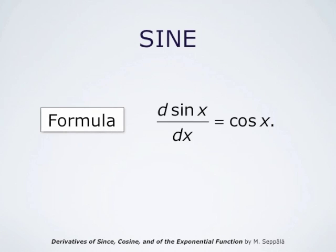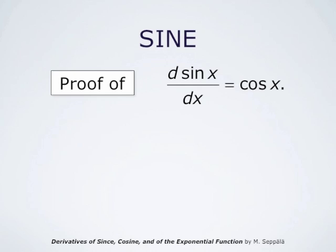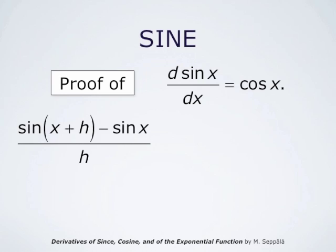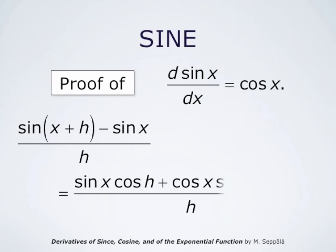The derivative of sine is cosine. To prove that d/dx sin(x) = cos(x), we use the definition of the derivative and compute the limit of the difference quotient: sine at x plus h minus sine at x, divided by h, as h goes to 0. We use the addition formula for sine: sine(x + h) = sin x cos h + cos x sin h. So the difference quotient becomes sin x cos h + cos x sin h minus sin x, all divided by h.